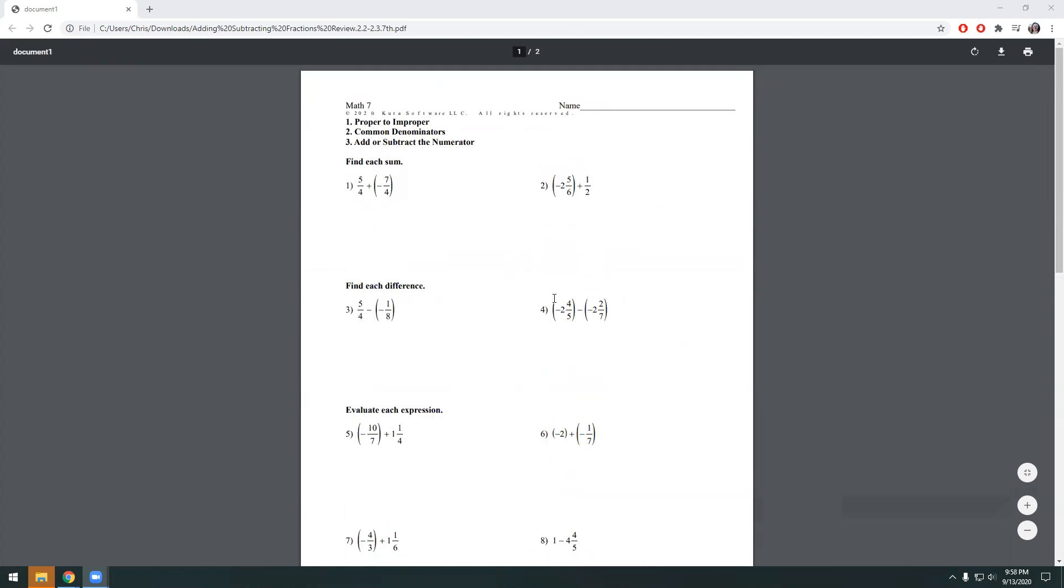I'm going to go through and solve a few of them with you guys just so you can hear me explaining how to solve them again. I've got the directions written up top. So first thing that you should do is make proper fractions improper, make sure we have common denominators, and then add or subtract the numerators. Let's work on number one first.